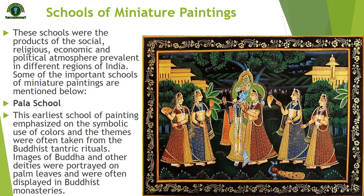Images of Buddha and other deities were portrayed on palm leaves and were often displayed in Buddhist monasteries. For the Indians, Buddha was a source of inspiration and they worshipped him. So they added Buddha in these images. The topics were love stories and scenes of weddings. They painted Buddha in blue color so that he would appear different from all the other figures.